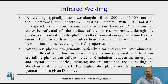Incident IR radiation can either be reflected off the surface of the plastic, transmitted through the plastic, or absorbed into the plastic as thermal energy. The ratio of these three interactions depends on the wavelength of IR radiation and the properties of the receiving plastic. Amorphous plastics are generally optically clear and can transmit almost all incident IR radiation, making them commonly used in TTIR. Semi-crystalline plastics can diffuse IR radiation between amorphous and crystalline boundaries, reducing transmittance and increasing absorbance. Higher absorptivity results in more heat generation for a given IR source.